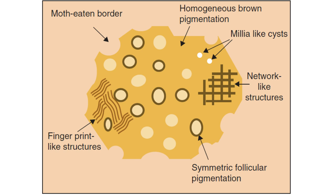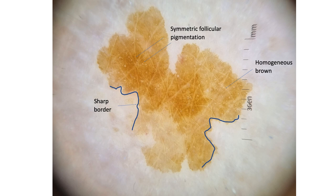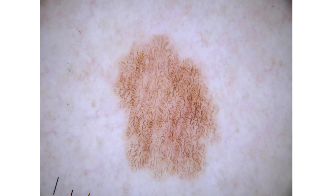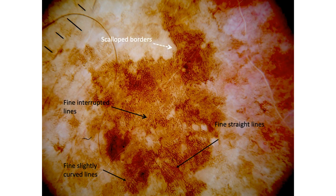That was a summary of all we have discussed for solar lentigo, and now we'll see some examples. In the first example, you can see the sharp or moth-eaten border very clearly, symmetric follicular pigmentation, and homogeneous brown color. Another example shows curved fine lines — fingerprinting — and a sharp border. In the final example, we have the scalloped or moth-eaten borders, fine interrupted lines, fine slightly curved lines, and fine straight lines. All of these together form the fingerprinting structures.